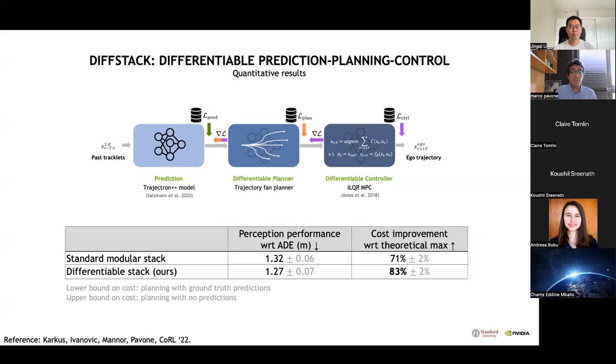To make planning cost interpretable, we present them relative to lower and upper bounds. We see that accounting for predictions with a standard modular architecture achieves a 71% cost improvement with respect to the maximum achievable cost improvement. This clearly shows that trajectory predictions are useful for planning. The point I want to make here is that a differentiable planner can achieve an 83% cost improvement with the maximum achievable cost improvement, an additional 12% relative to what the standard modular stack can deliver, which is quite substantial. This is in addition to potentially drastically reducing development cost.